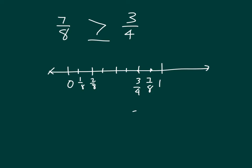Now, if I did not want to draw a model, I could have written an equivalent fraction for three-fourths as eighths, to find that common denominator. By multiplying the numerator and denominator by the same thing, I could have renamed three-fourths as six-eighths. Then it would have been very easy to compare them, because they had the same common units. We know that seven-eighths is bigger than six-eighths, so seven-eighths is bigger than three-fourths.